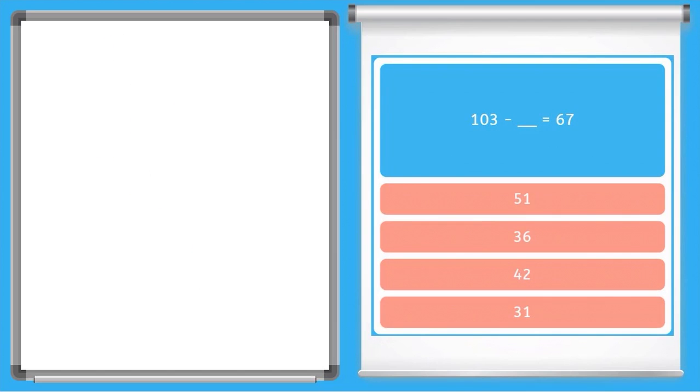All right. So with this next one, we have 103 minus an unknown equals 67. Let's flip that problem around. So we have 103, and let's subtract 67. 7 from 3. We'll need to borrow, which we cannot because there are no tens to borrow from.